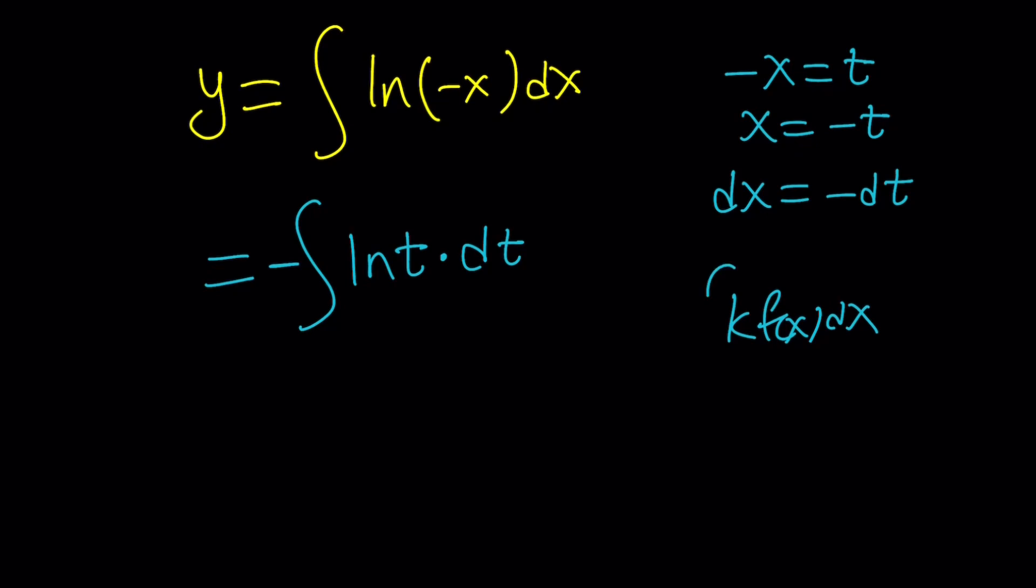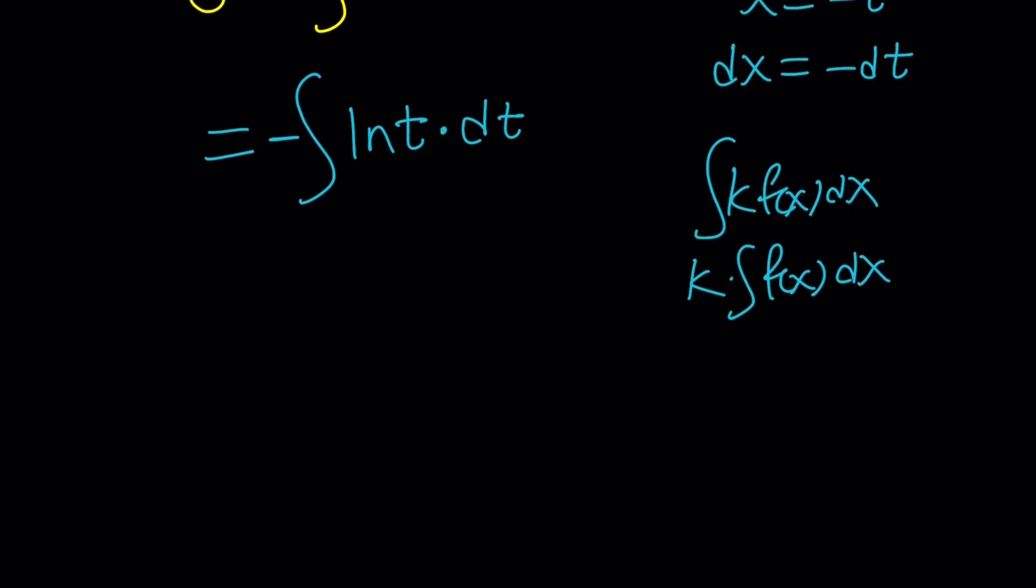And that basically comes from the definition of an integral which expresses actually the area under the curve. And with summation symbols, we can do the same thing. That's where this comes from. Anyway, so this is the integral we got. But how do you integrate ln of t?